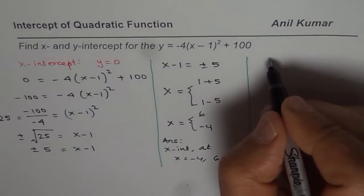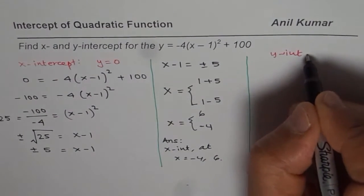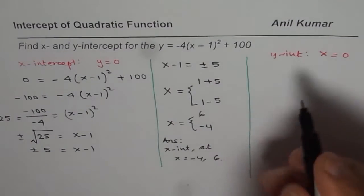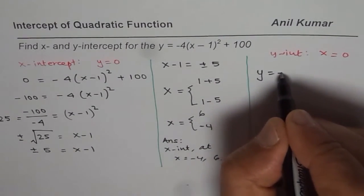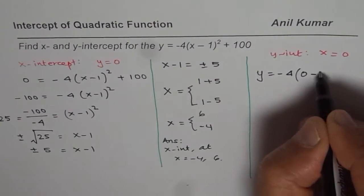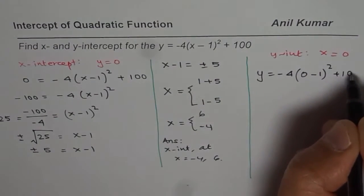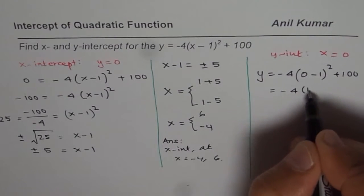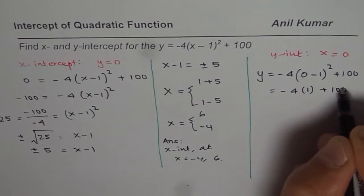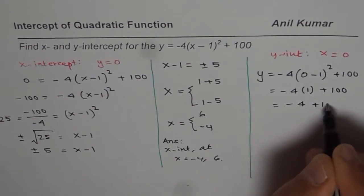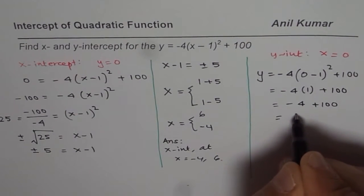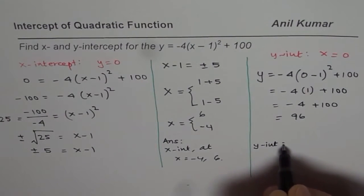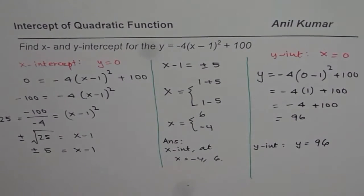Now we will find the y-intercept. The y-intercept means x equals 0. So we substitute x equals 0 into the equation: y equals minus 4 times (0 minus 1) squared plus 100. That gives us minus 4 times 1 plus 100, which is minus 4 plus 100, and that equals 96. So the y-intercept is y equals 96.